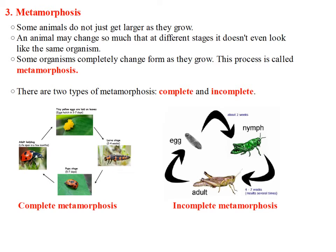Now we're going to talk about metamorphosis. This process happens in the life cycle of certain animals. Some animals do not just get larger as they grow. An animal may change so much that at different stages, it doesn't even look like the same organism. Some organisms completely change form as they grow, and this process is called metamorphosis. There are two different types of metamorphosis: complete metamorphosis and incomplete metamorphosis.